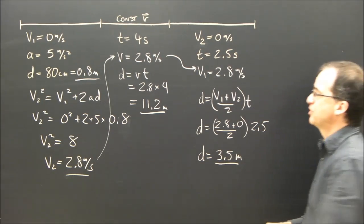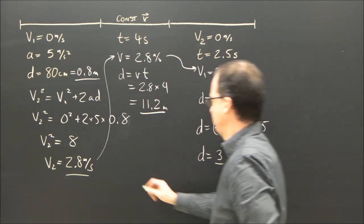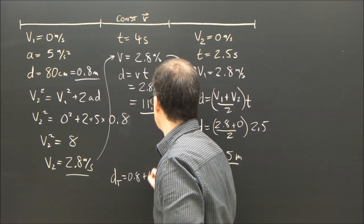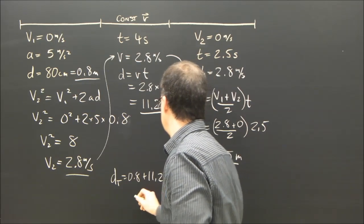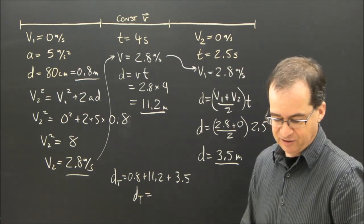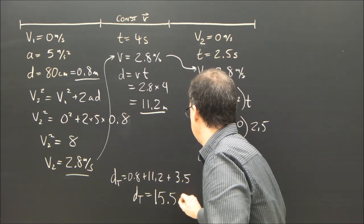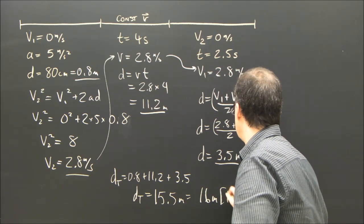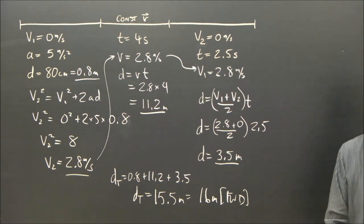So this object went 0.8 meters, 11.2 meters, and 3.5 meters. So the total displacement is 0.8 + 11.2 + 3.5. The total is, I hope this is still in the video frame, the total is 15.5 meters. Let's call that 16 meters forward. There you go.